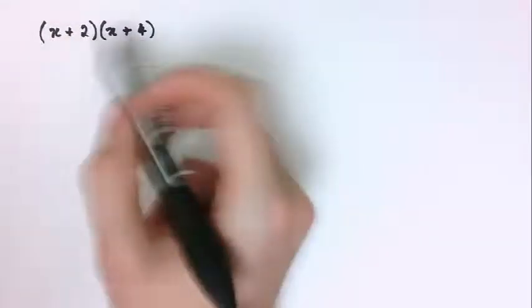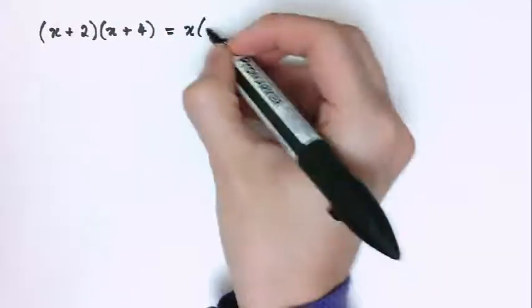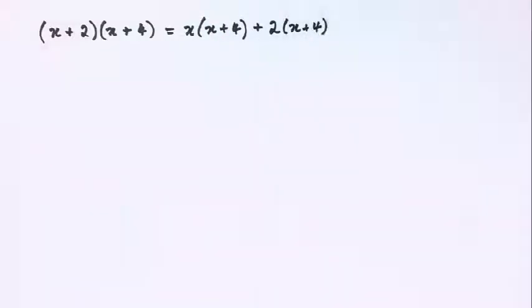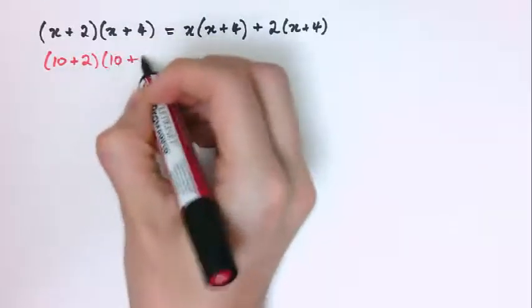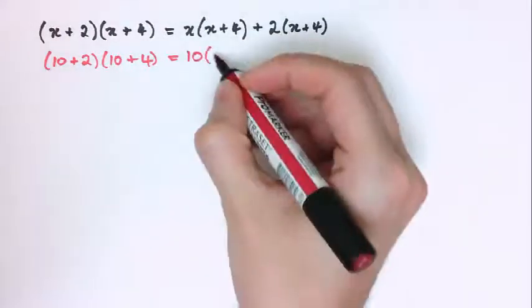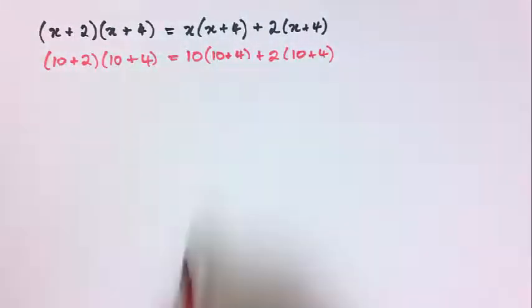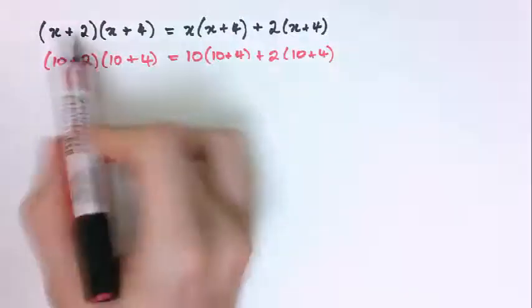This means I'm taking (x + 2) and multiplying it by (x + 4). That's the same as taking x and multiplying it by (x + 4), and adding it to what you get when you do 2 times (x + 4). I've got x plus 2 lots of it — that's the same as x lots of (x + 4) and 2 lots of (x + 4).